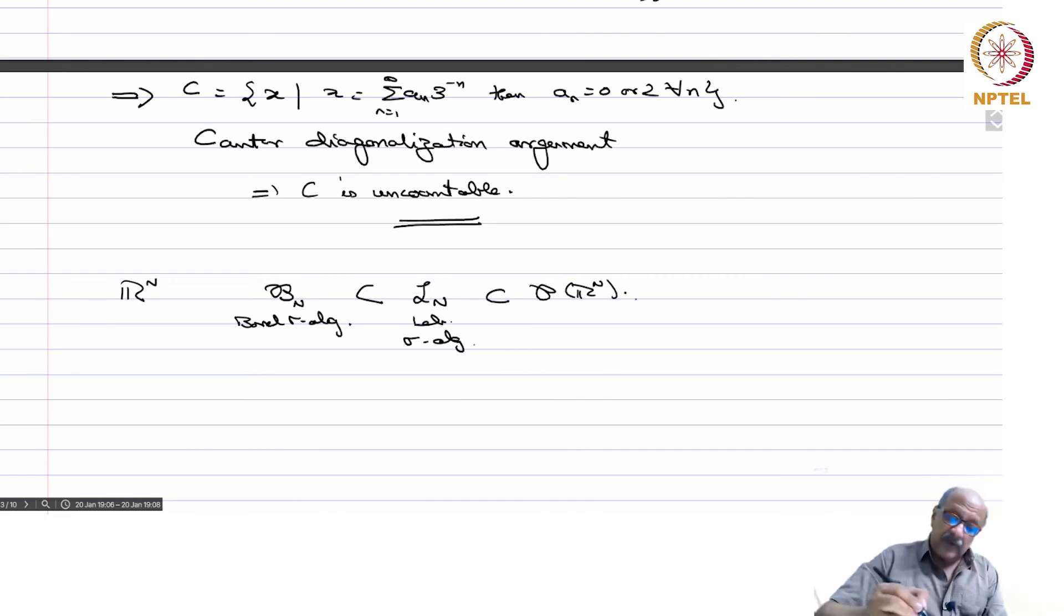So the question is, are these inclusions strict? Can you have a Lebesgue measurable set which is not Borel measurable? Can you have a subset of R^n which is not Lebesgue measurable? So in other words, is L^n equal to the power set or not, or B^n equal to L^n?